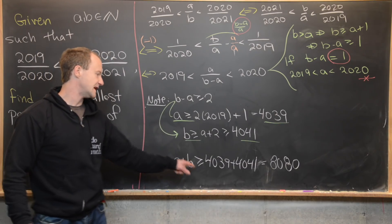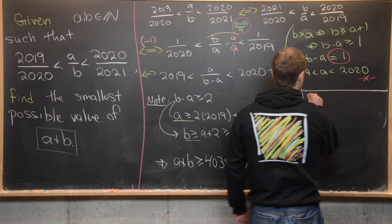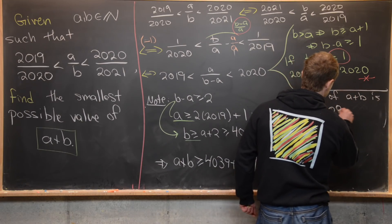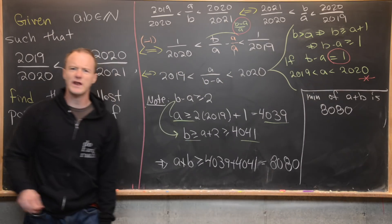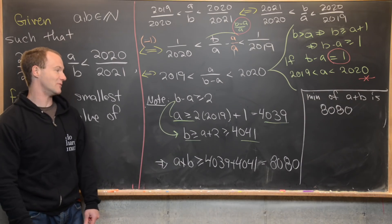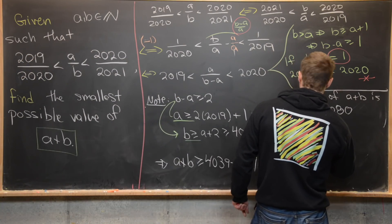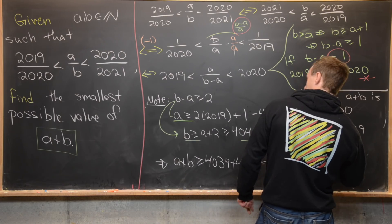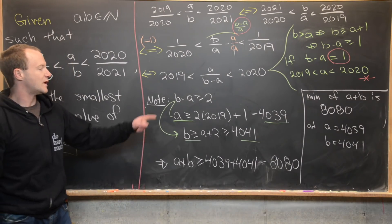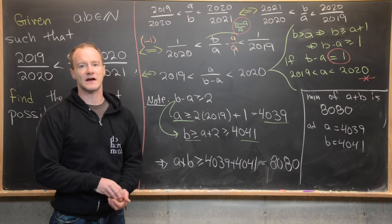Since a + b must be at least 8080, the minimum value of a + b is 8080. This minimum is achieved when a = 4039 and b = 4041, and by our construction we know that 4039/4041 lies strictly between 2019/2020 and 2020/2021 as required.